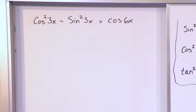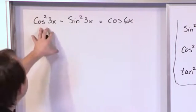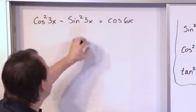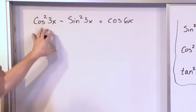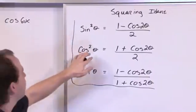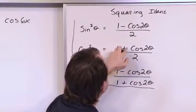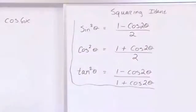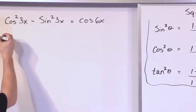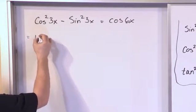So here we have a cosine squared, here we have a sine squared. We just use the identities here. We have a cosine squared of an angle, it's 1 plus cosine of 2 times the angle over 2.